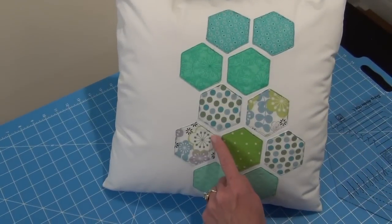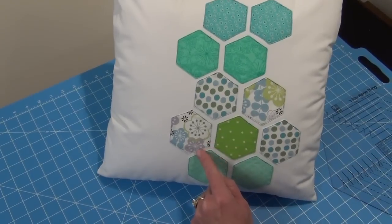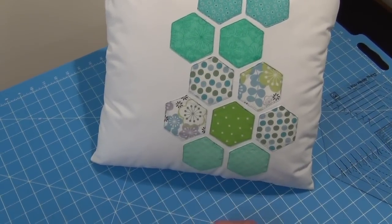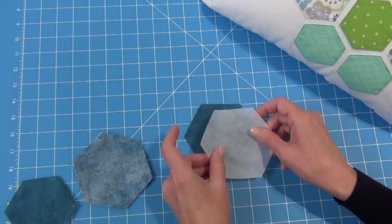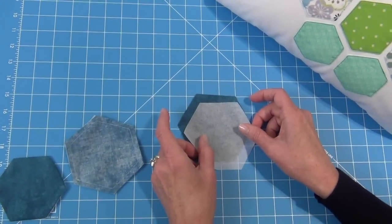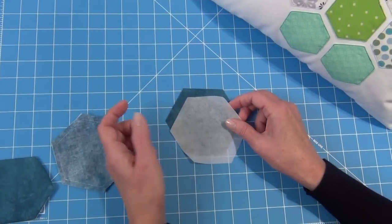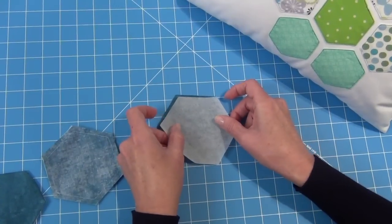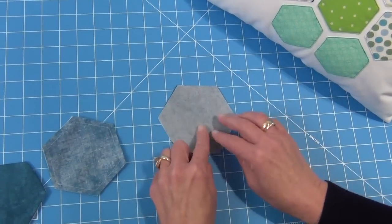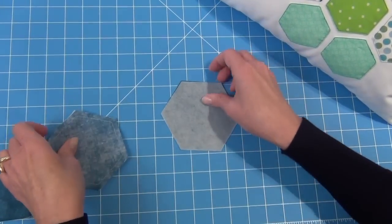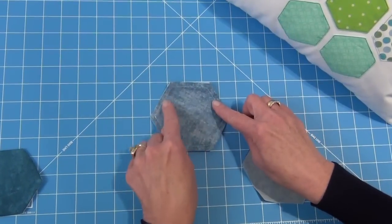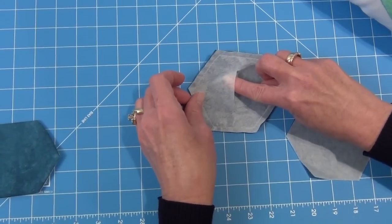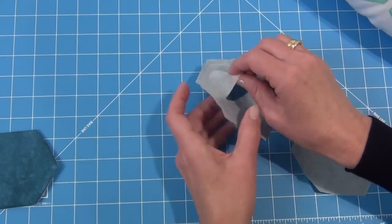An easy way to do fusible applique where your seam allowances are actually pressed under and your interfacing is exposed, is to actually cut your fusible interfacing at the same time you cut your hexagons. They'll be exactly the same size. And then you're going to put right sides together so the right side of your fabric will face the fusible side of the interfacing. And then you're going to stitch in a ¼ inch seam allowance all the way around the edge.